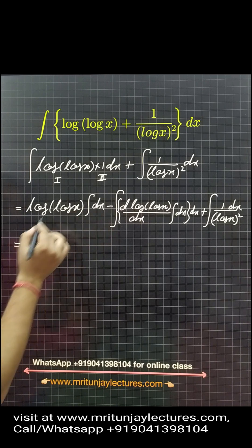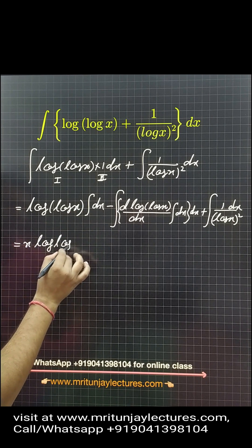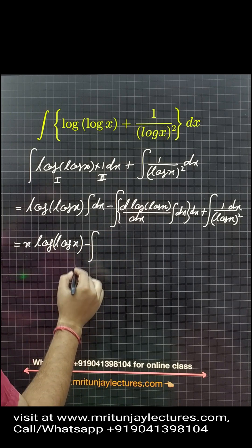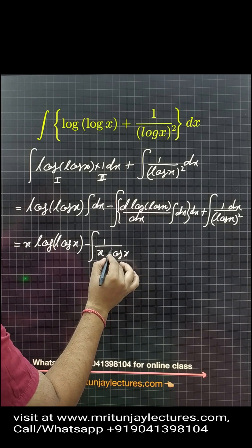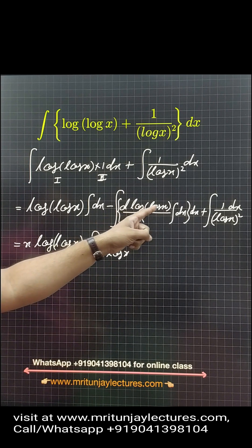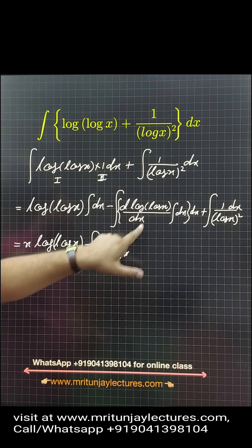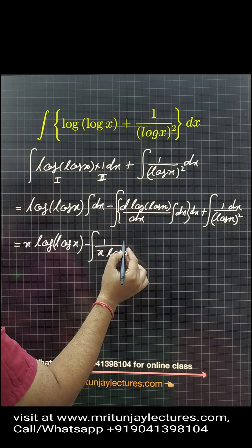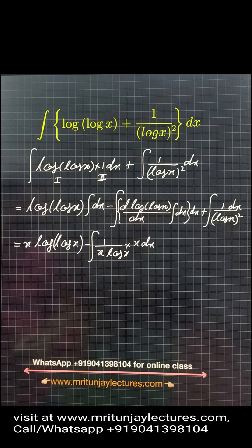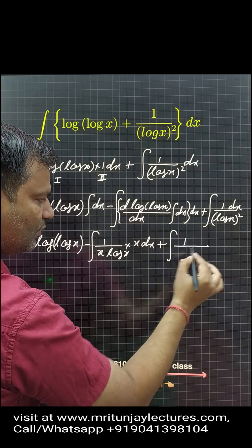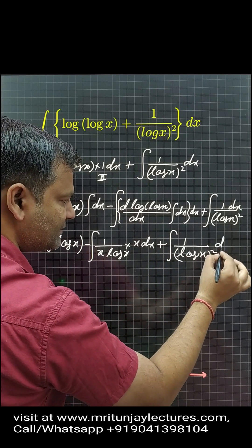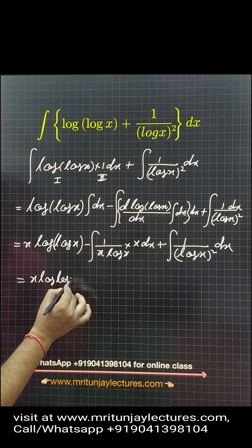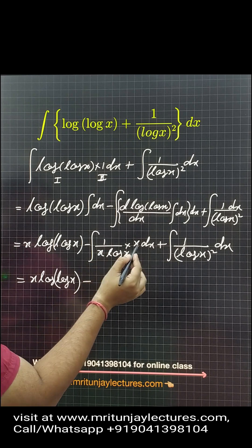Now, look — that gives x into log(log x). The differentiation of log(log x) is simply 1/log x. Basically, the derivative of log(log x) is 1/log x · 1/x. So x and the derivative simplify, and x cancels to give simply 1/log x.